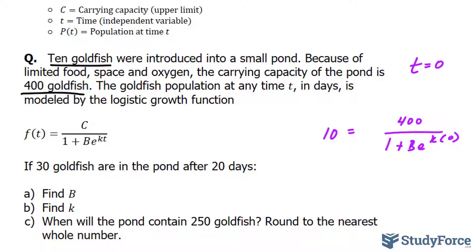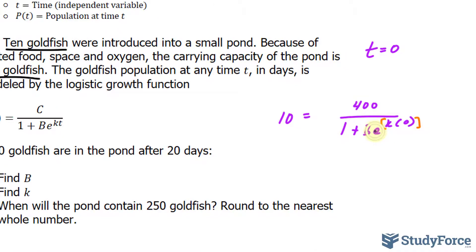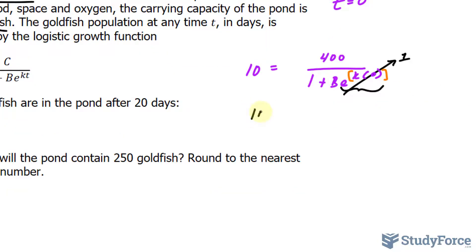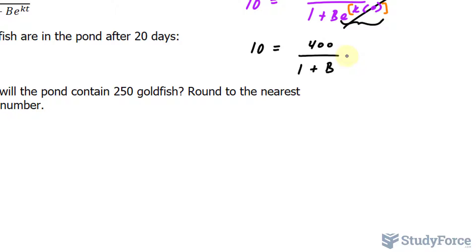And from here you can solve for B. So k times 0 happens to be 0, and anything raised to the power of 0 gives you 1. This factor goes to 1, leaving us with 10 is equal to 400 over 1 plus B. We have to solve for B, and we can do that easily using some algebraic techniques. We multiply both sides by the denominator, 1 plus B, and then expand the left side. The right side, this will cancel out with that. So expanding this, we get 10 plus 10B is equal to 400.